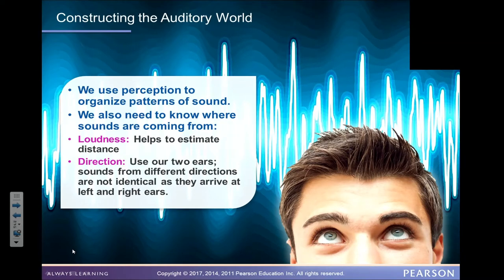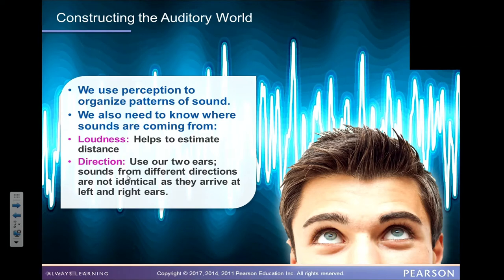We also need to know where our sounds are coming from in order to help us estimate distance. There's a reason we have two ears — sounds from different directions are not identical as they arrive at our left and right ears, giving us a slight difference to work with.